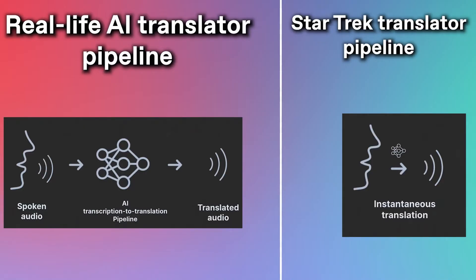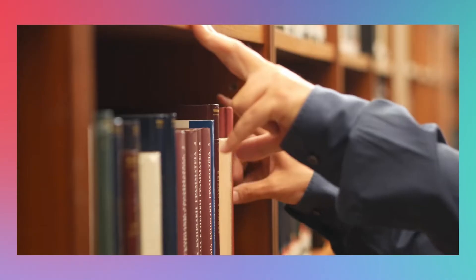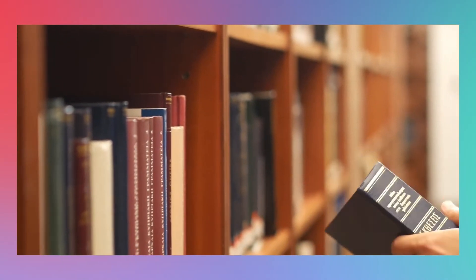Latency meaning delay. In Star Trek, there is zero delay between speaking and translation. In the real world, however, this is impossible. Because it takes computers some non-zero amount of time to hear what the speaker is saying, generate a transcription, and translate it into the target language. In order for there to be zero latency, the computer would have to translate words as they're coming out of the speaker's mouth. But again, that's impossible because language is simply too complex.